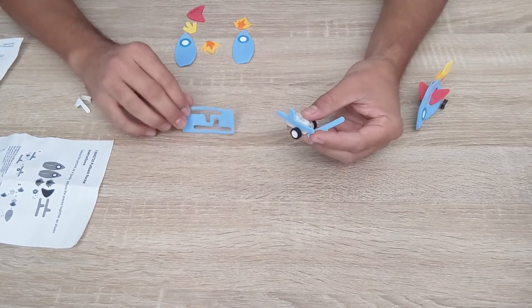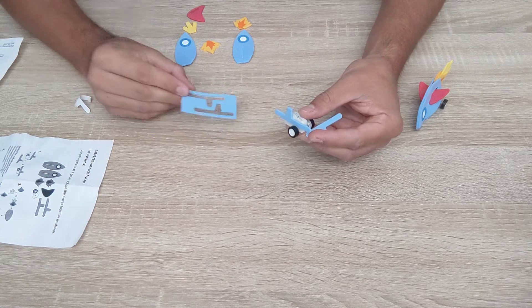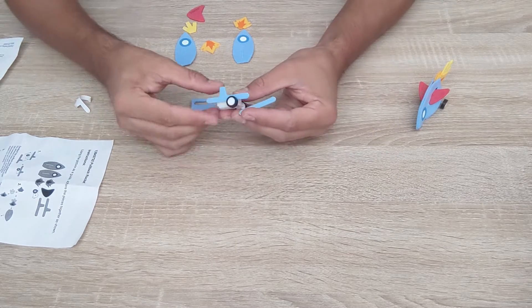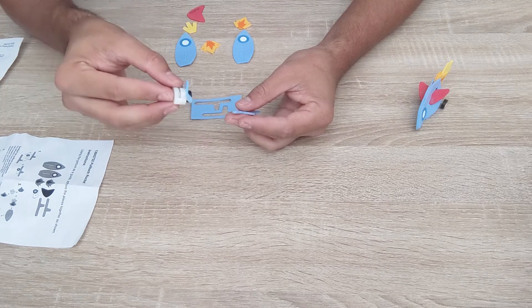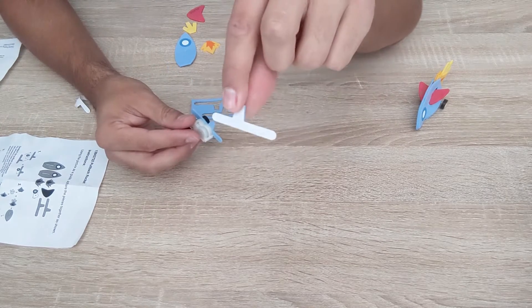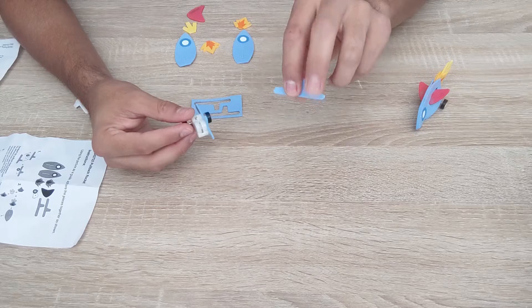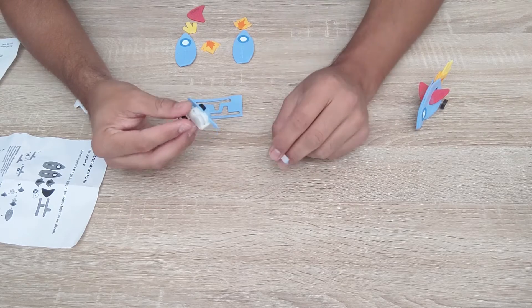So the first thing we're going to do is pop out these pieces from our piece of foam. Most of the foam on this is adhesive, so one side is sticky. You'll see it with a white piece of paper protecting it, and the other side is regular. So we're going to be using a lot of the sticky sides.